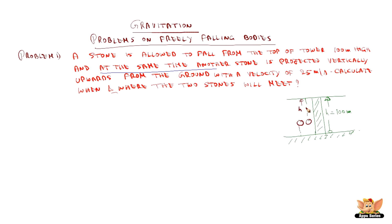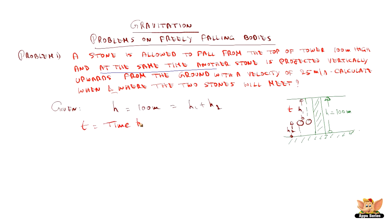The distance each stone travels is different. Let's call the distance from the top H1 for the first stone, and H2 for the upward-moving stone. The basic relationship is H = H1 + H2, where H is 100 meters. H1 is the height traveled by the falling stone and H2 is the height traveled by the upward-moving stone to their meeting point. The time taken in both cases to reach the meeting point is T. Using the equation of motion: S = UT + ½AT² (or ½GT² for freely falling bodies), we write H in place of S.